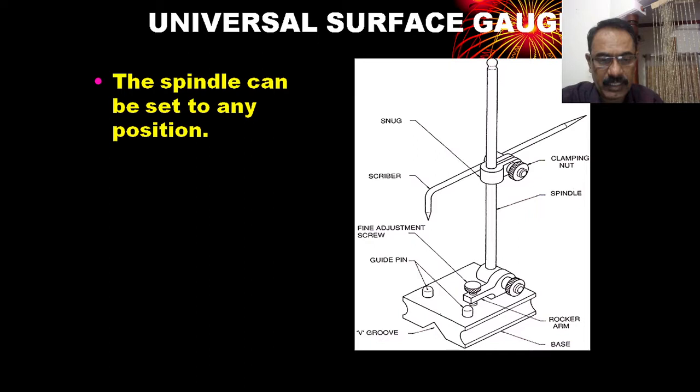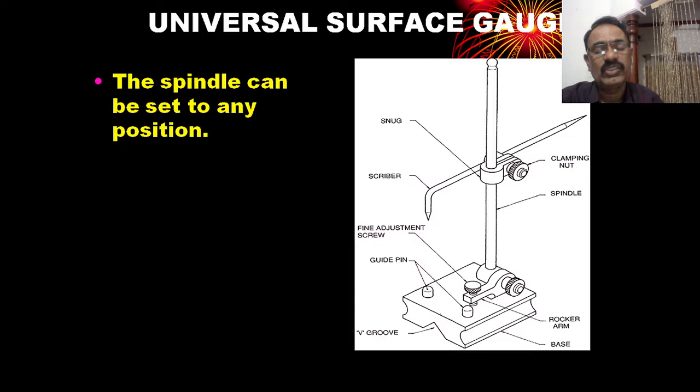The universal surface gauge is also used for truing the job concentric to the machine, like on a lathe. Truing the job is also possible with the universal surface gauge.